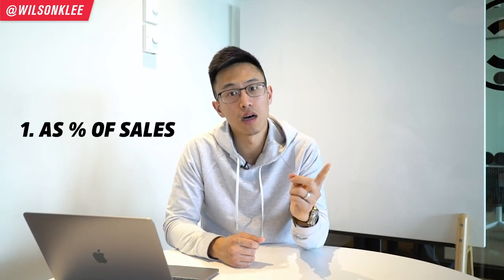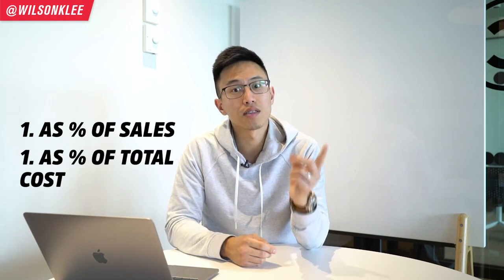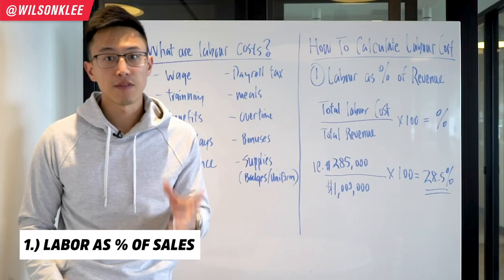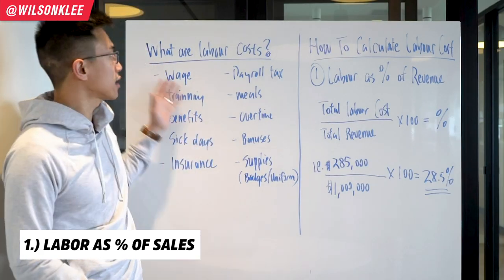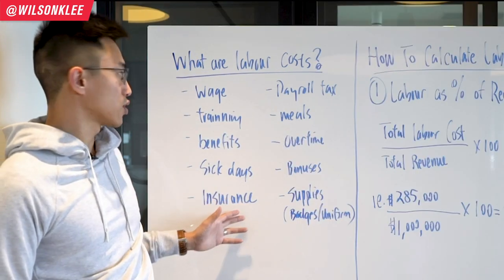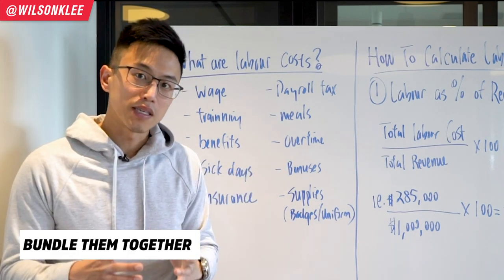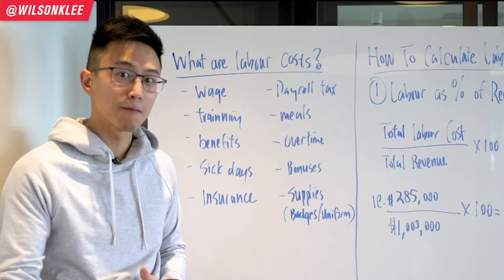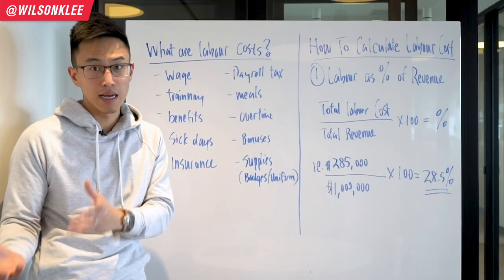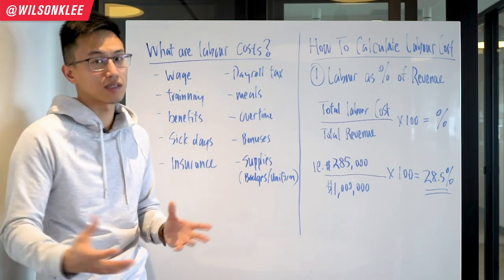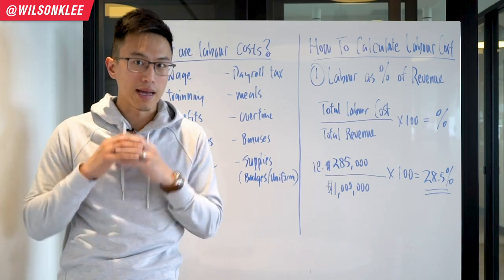There are two ways to this. First, labor costs as a function of sales. Second, labor costs as a function of your total cost. The first way to calculate labor costs is as a function of the revenue. These are the different labor costs involved: wages, training, benefits, sick days, insurance, all these different things. I like to bundle them all up together because I don't want these to fall between the cracks as a miscellaneous item in my books. Because once it becomes a miscellaneous item, I don't know where to categorize it and I don't know which levers to pull. That's the reason why I put them all together as labor costs.